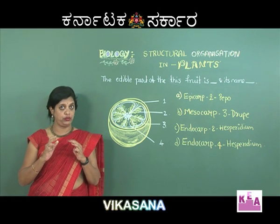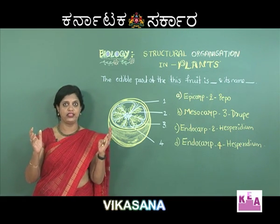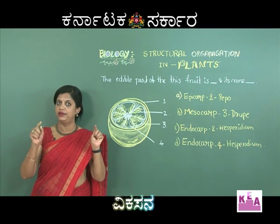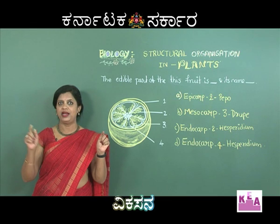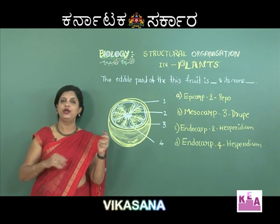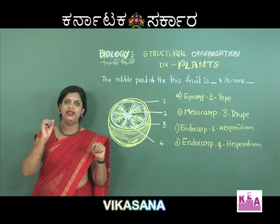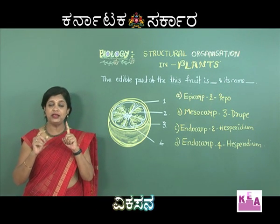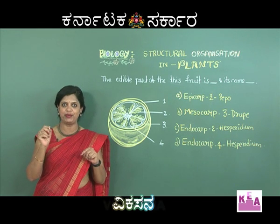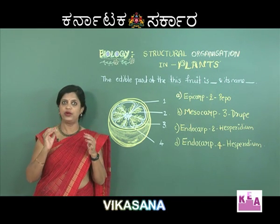If you know the types of fruits broadly, fruits are classified into simple fruits, then aggregate fruits, and composite fruits. A simple fruit develops from one flower. Aggregate fruits come from a single flower having a multicarpellary apocarpous ovary, producing a bunch of fruits — that is called aggregate fruit.